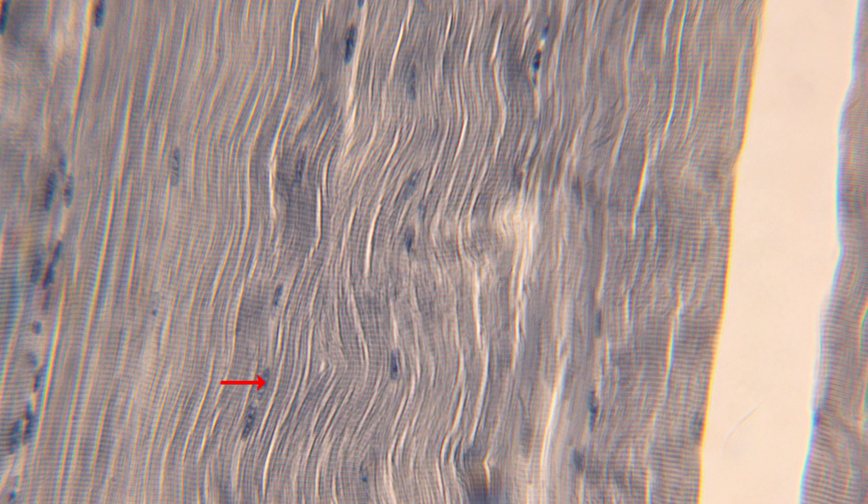We can also see that we have hundreds of nuclei for each muscle cell all along the periphery of the fiber. It's very important to note that we have hundreds of nuclei all peripherally located.